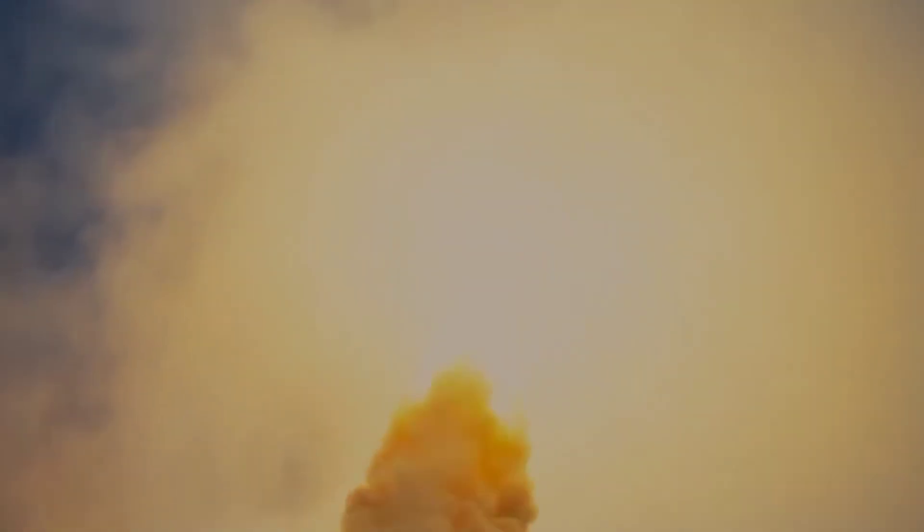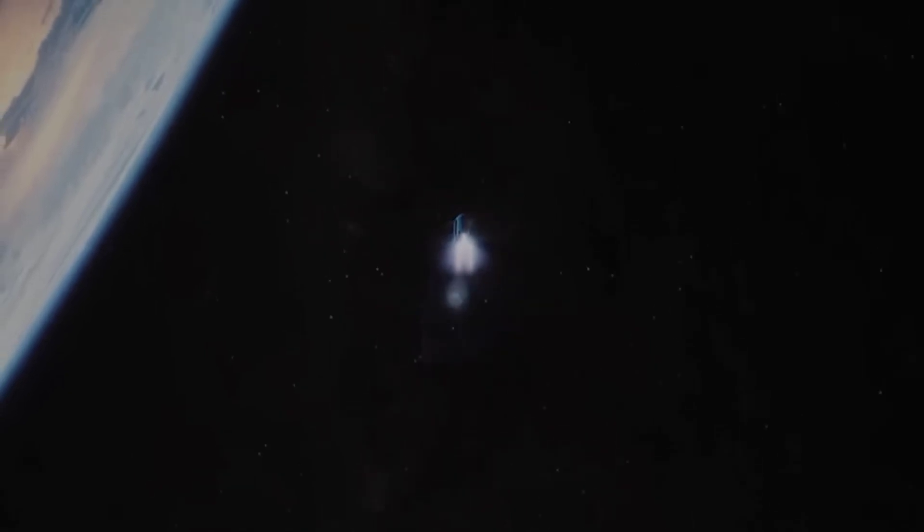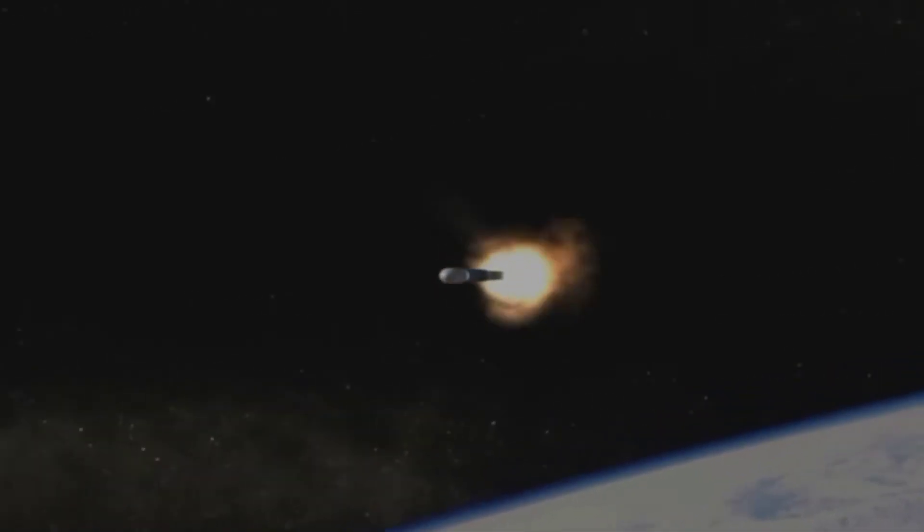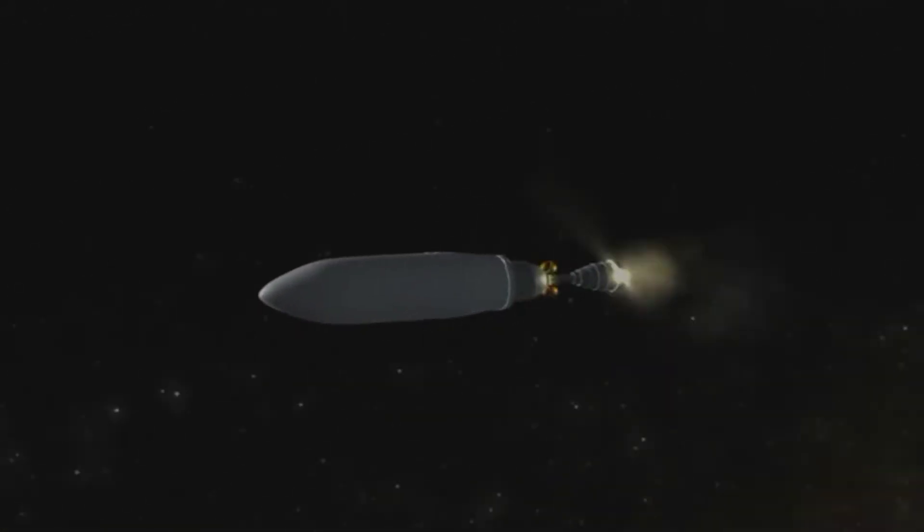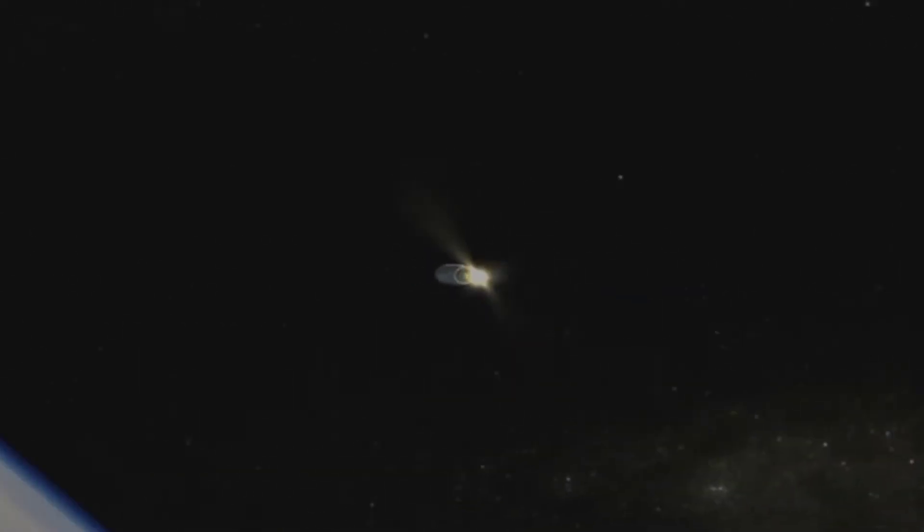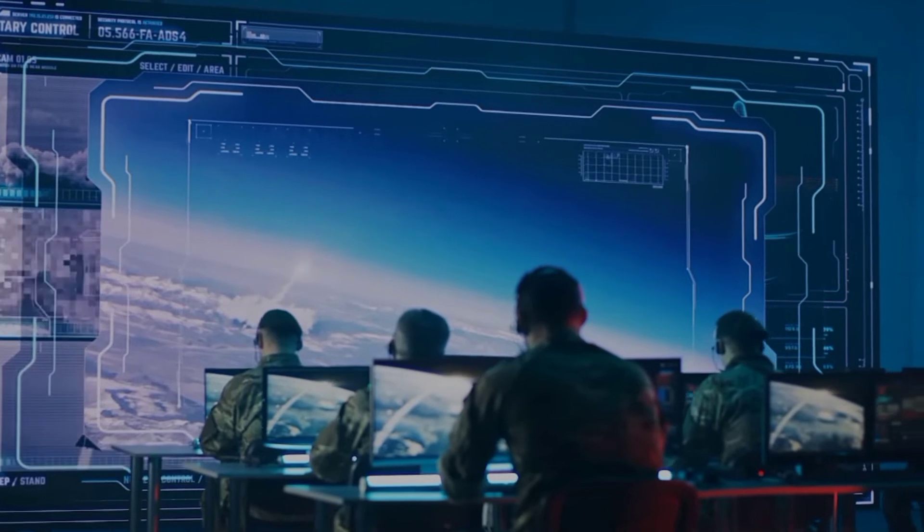China's FOBS is a nuclear-capable missile that jets into low-Earth orbit, and then de-orbits at the right time to kamikaze into a target anywhere on Earth, like an intercontinental ballistic missile, or ICBM, but with the added plus of higher range and insanely greater speeds.